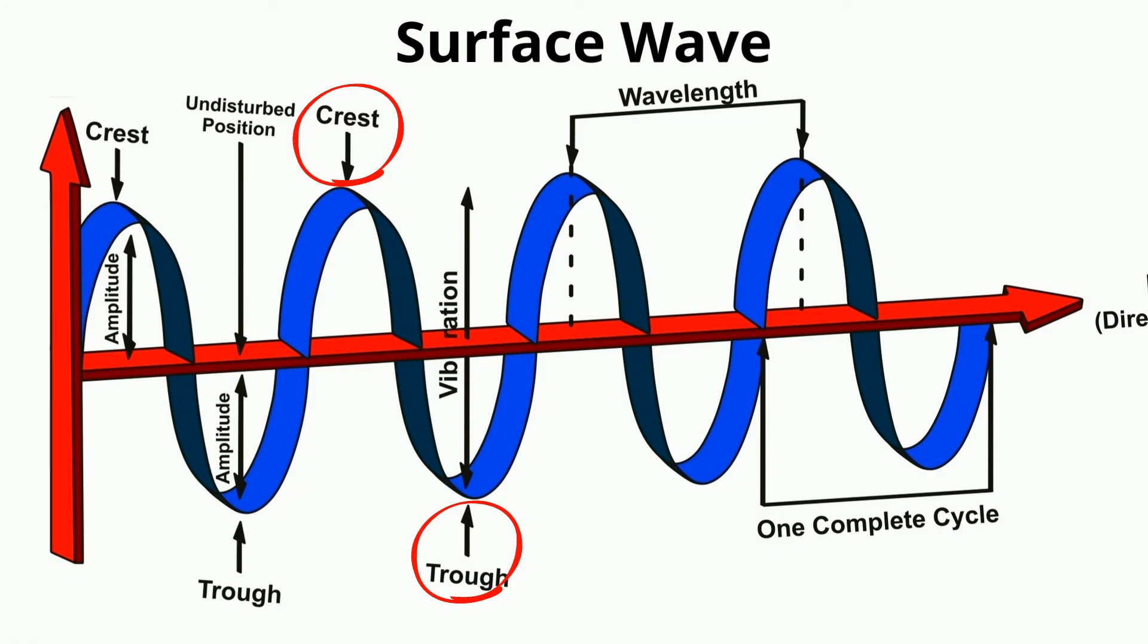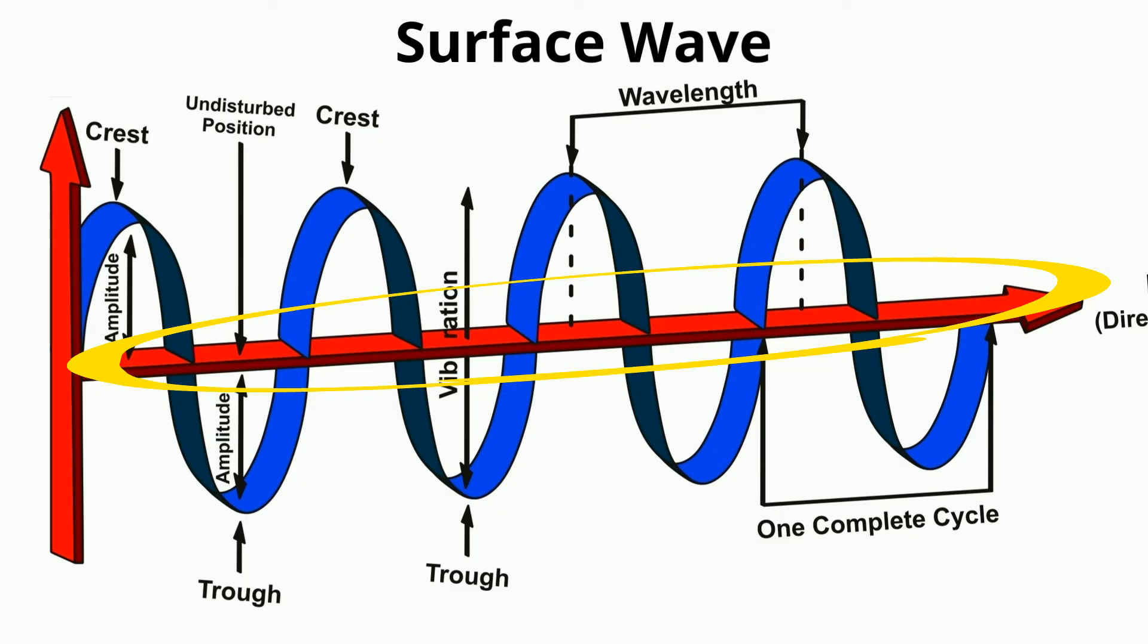It is the position the medium would take if there was no wave. It is represented on a graph by a line drawn to the center of the wave. The propagation is the direction of the wave.